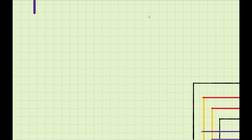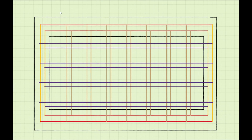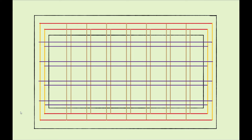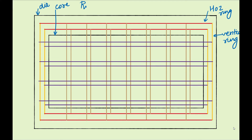Let us take this example for a sub-block configuration of the power. In this example we have a design with a power grid. The outer side is your die and the inner side is your core. The red color is your horizontal ring running around the design, and the yellow one is your vertical ring running in the design, in the area between core and die. It is important to understand that the ring runs between the die-to-core area spacing.